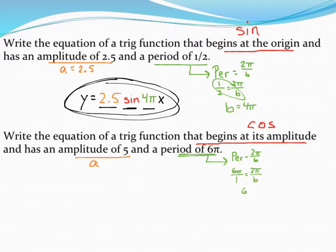And then equals 2 pi over b. So if I cross multiply, I get 6 pi times b has to be equal to 2 pi. And solving for b, let's go ahead and divide by 6 pi. So when I do that, I can see the pi's cross out. 2 over 6 just simplifies to 1 third.